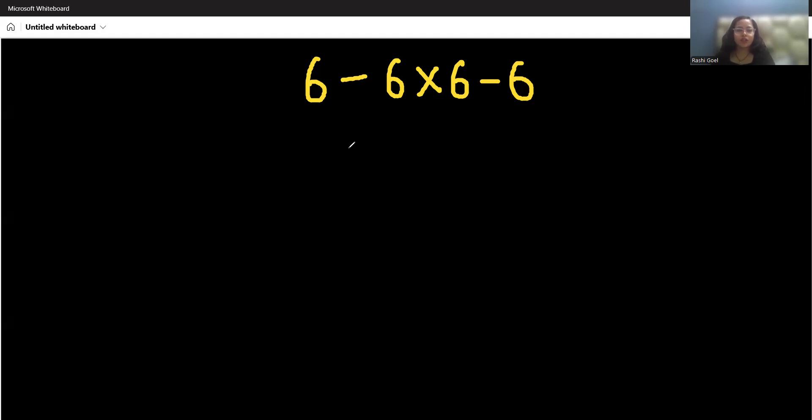People solve 6 minus 6 times 6 minus 6 from left to right. 6 minus 6 is 0, times 6 minus 6. 0 times 6 is 0, minus 6. So they reach the answer minus 6, which is a wrong answer.